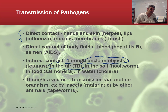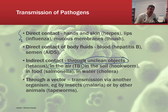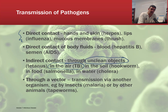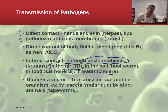You may have at some point had a tetanus shot — tetanus is one we can get when we've cut ourselves on something like rusty wire. Hookworm is something that can be transmitted through soil. Salmonella is not a particularly nice bacterium and can be transmitted through food, particularly poultry. And cholera, when we look at it later on, tracks back to water supplies — people sharing the same well — and transmitting the pathogen that way.